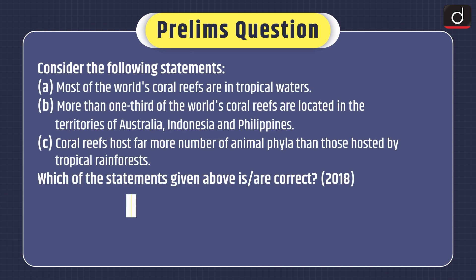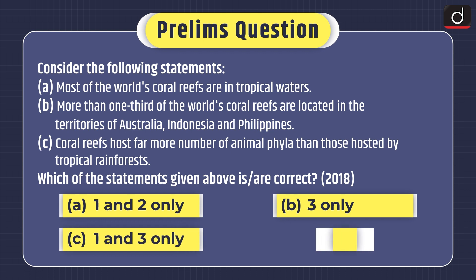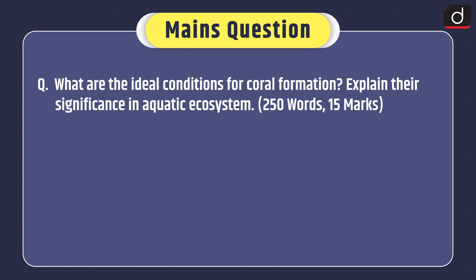Now it's time for the practice question. Consider the following statements. Statement 1: Most of the world's coral reefs are in tropical waters. Statement 2: More than one-third of the world's coral reefs are located in the territories of Australia, Indonesia and Philippines. Statement 3: Coral reefs host far more number of animal phyla than those hosted by tropical rainforests. Select the correct statement from the options — A: 1 and 2 only, B: 3 only, C: 1 and 3 only, or D: 1, 2 and 3. The main question for practice is: What are the ideal conditions for coral formation? Explain their significance in the aquatic ecosystem.